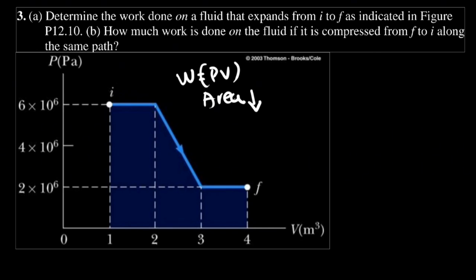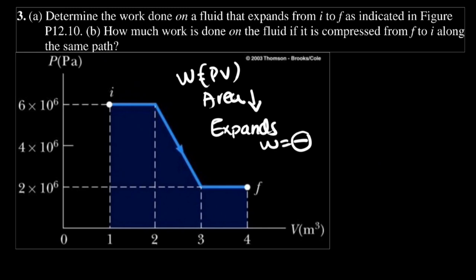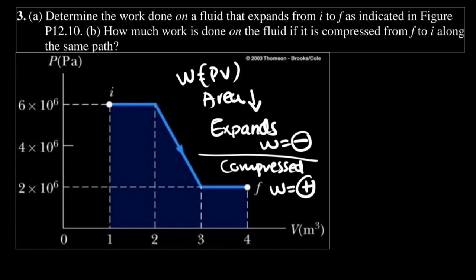They want the work done when it expands from I to F and when it compresses from F to I. We find the area under the graph. When it expands the work done is negative, and when it is compressed the work done is positive. We can divide this diagram into several parts: a triangle, and two rectangles.